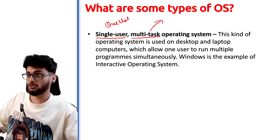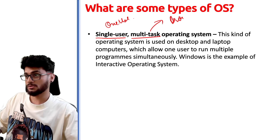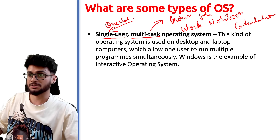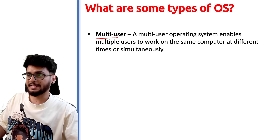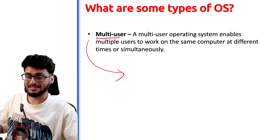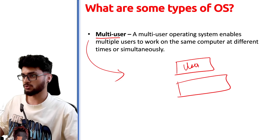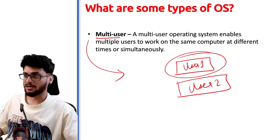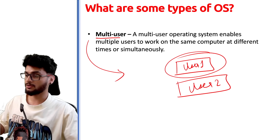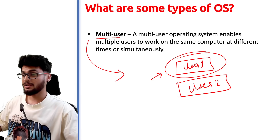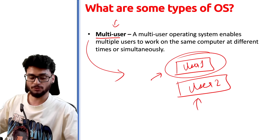Then there is Single User Multi-Task — again only one user, but you can do multiple things together, like browsing files, working on a notebook, and doing calculations simultaneously. After that came the Multi-User operating system, where multiple users can work on the same operating system at a given point of time. For example, on some systems two users can work simultaneously — that is a multi-user operating system.